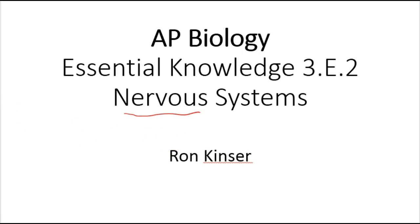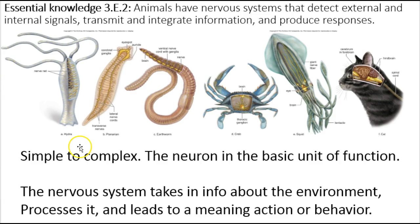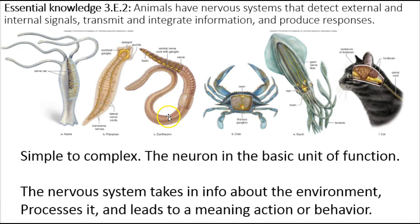Organisms have various complexity, and the nervous system is part of that complexity. Starting with a simple organism like a Hydra, you'll have a primitive series of nerve networks. As you progress in complexity of organisms, the nervous systems become more complex as well. But essentially, at the heart of all of these nervous systems, the neuron is the basic unit of function.